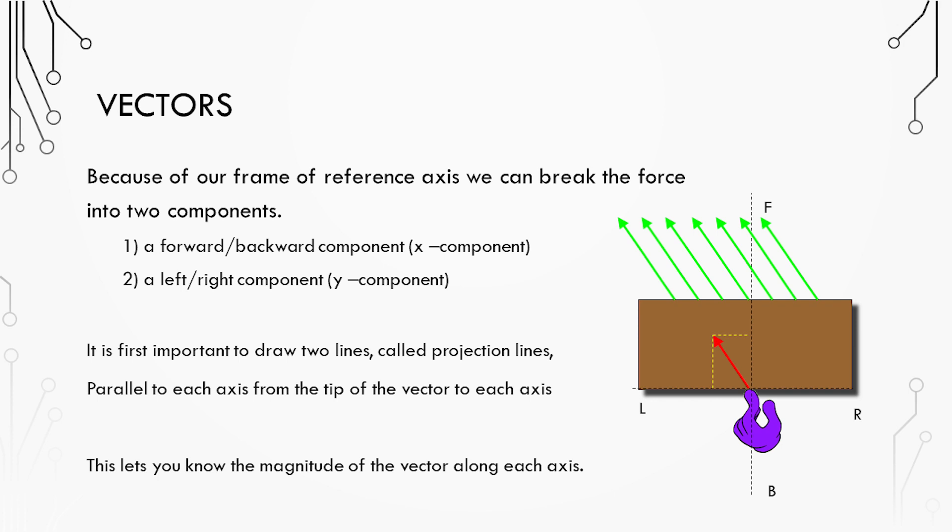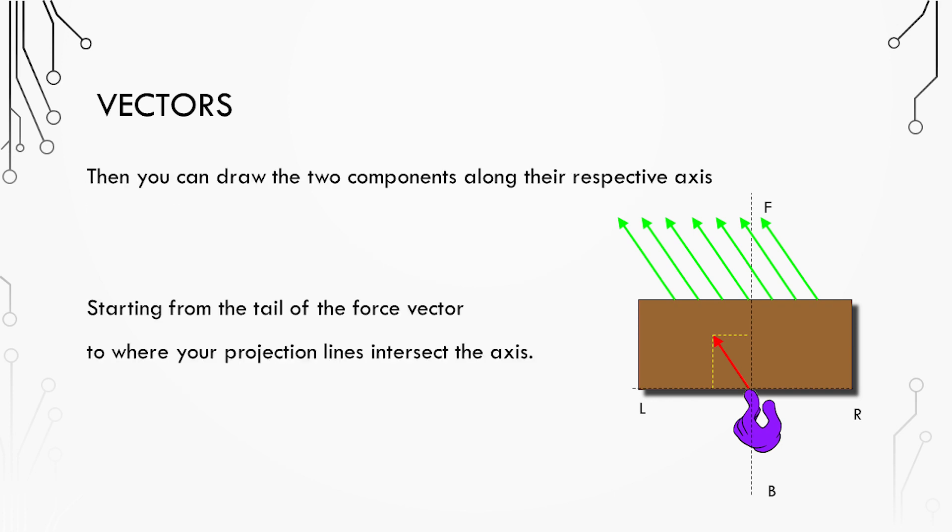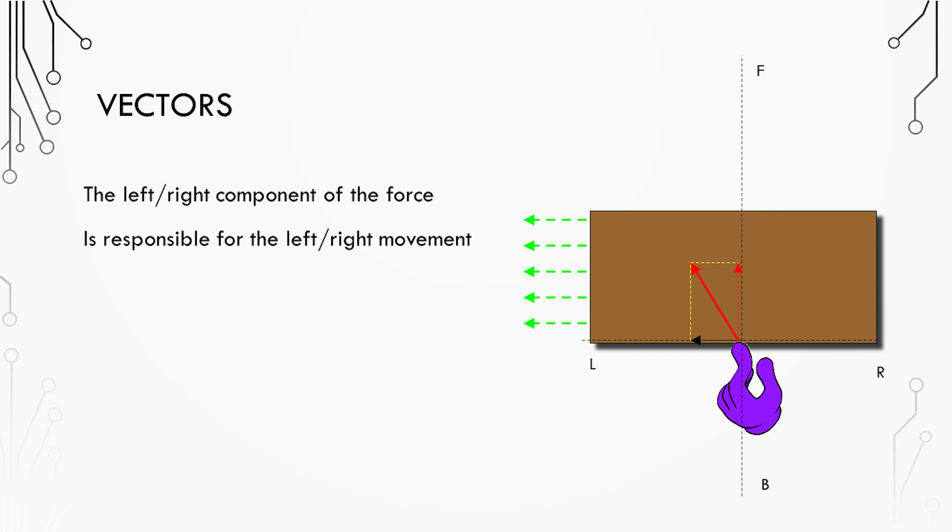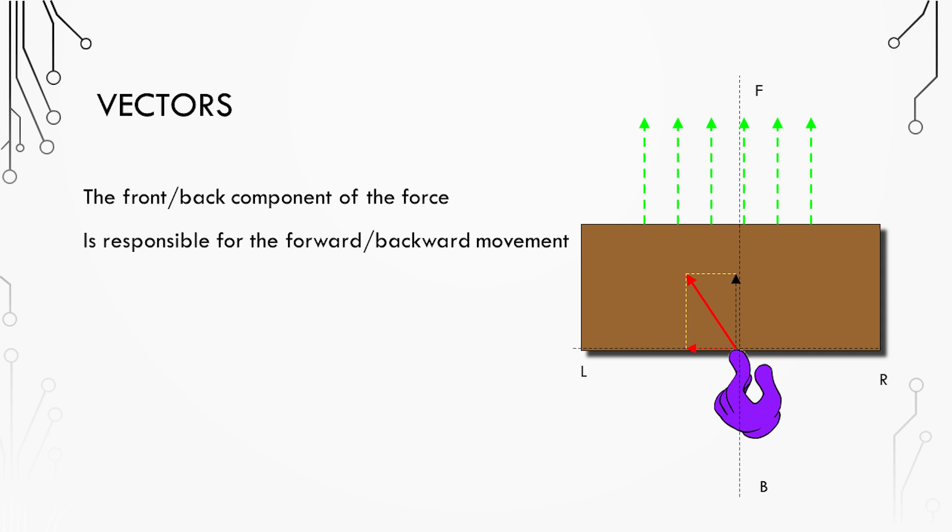We do this by breaking that initial force vector into components. In this case, forward and left components or you could think of them as X and Y components. So to represent these component vectors we're going to be drawing a line starting from the origin of the initial force vector and moving parallel to the axis of interest. If we start with the left vector we can draw a line moving parallel from the initial application of force along the left axis until the point where it reaches the edge of the tip of the initial force vector.